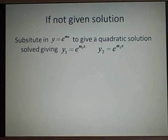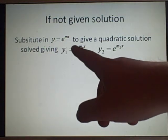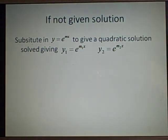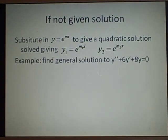Once you cancel out all the e to the mx's, it will give you two solutions, y1 equals e^(m1x), m1 is our first solution of the quadratic we'll get, and y2 is e^(m2x), our second solution. Now I've got a quick example here. Find the general solution to y'' + 6y' + 8y = 0.